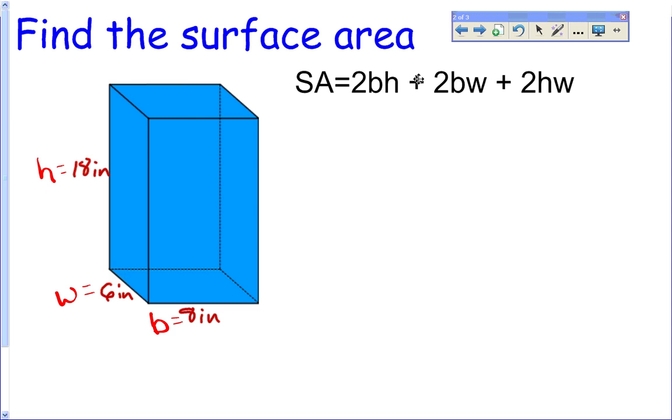I said the height is 18, the width is 6, and the base is 8. Everywhere I see an h in this formula I'm going to replace it with 18, everywhere I see a w I'm going to replace it with 6, and everywhere I see a b I'm going to replace it with 8. It's as simple as that.